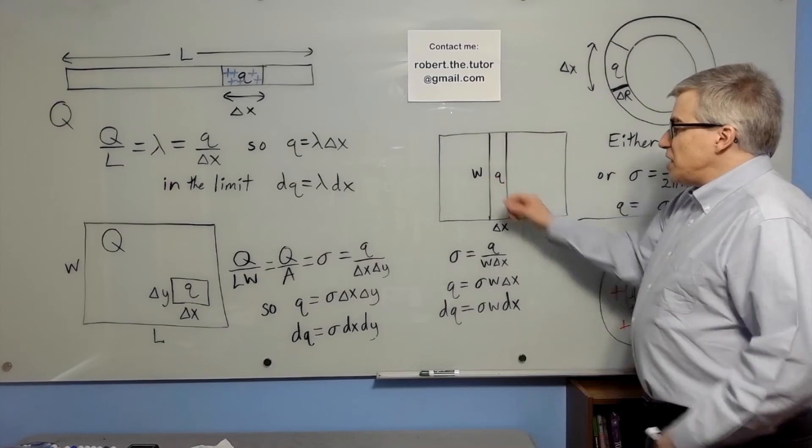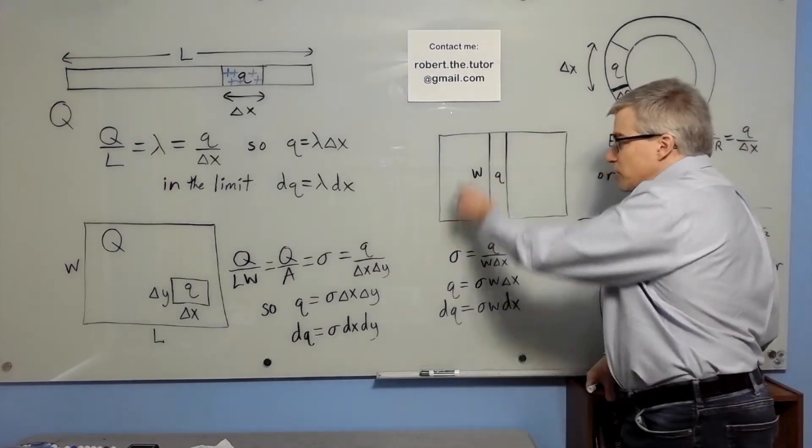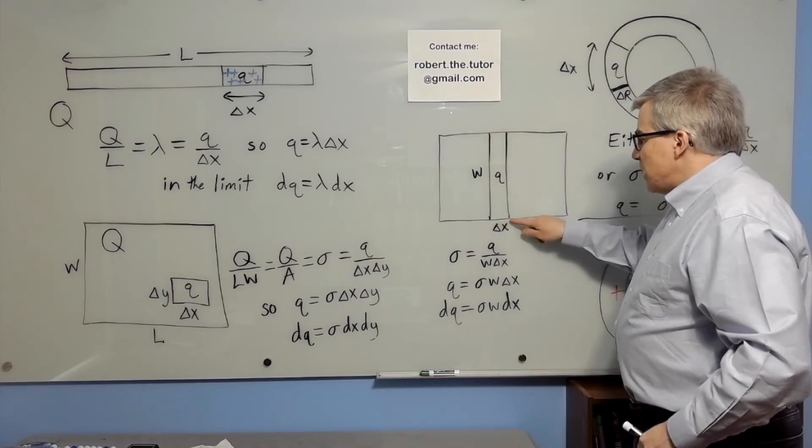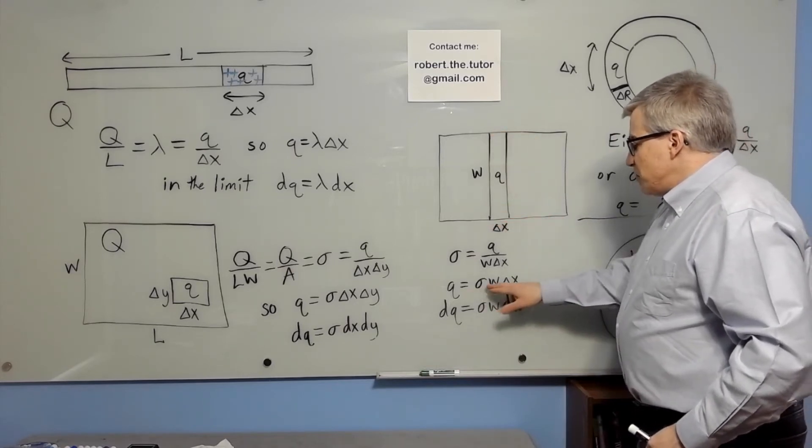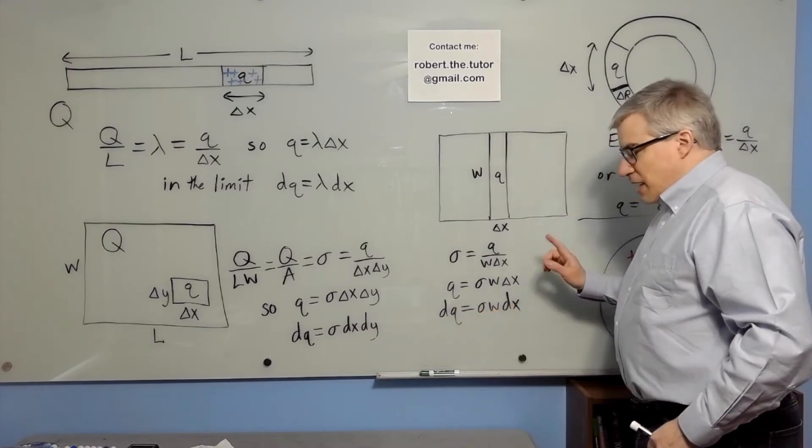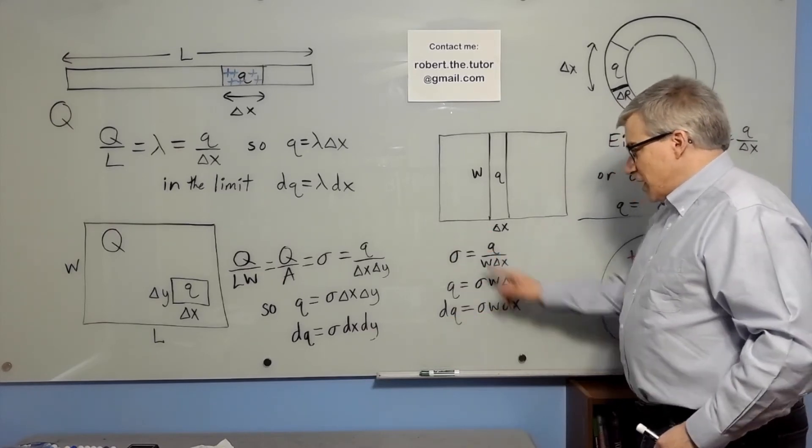Or you could take the sheet and instead of cutting it into tiny squares, you could cut it into thin strips. So the area would be w delta x, Q would be sigma w delta x, dQ would be sigma w dx, and you'd only have to integrate once, integrate x from zero to L.